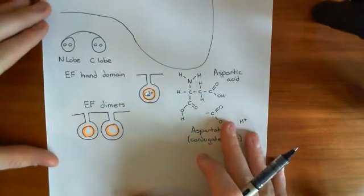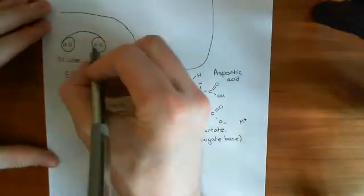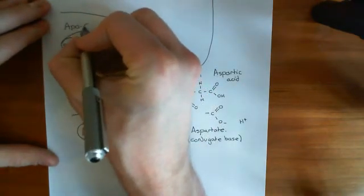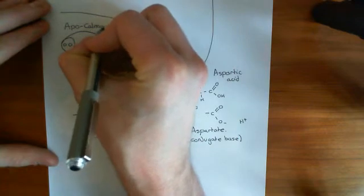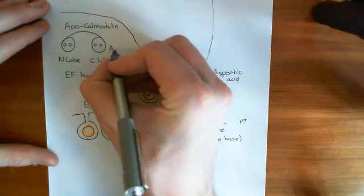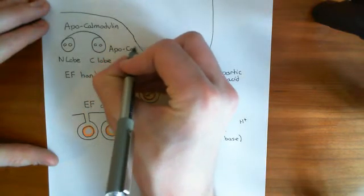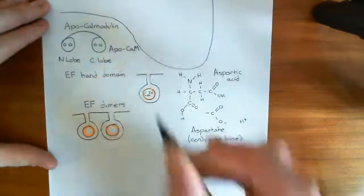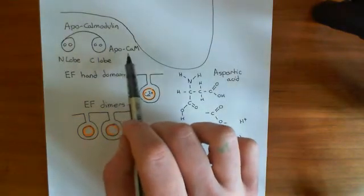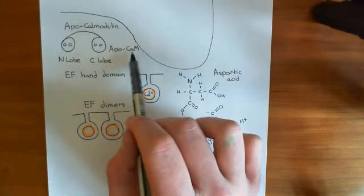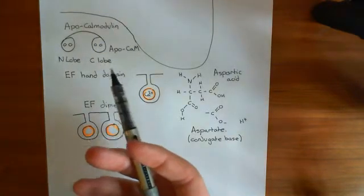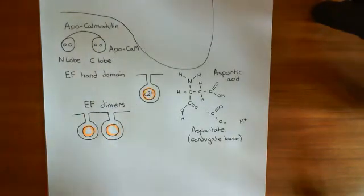Before calmodulin has calcium bound to it, in this state it is known as apocalmodulin, often denoted apoCaM — where CaM with a capital C, lowercase a, capital M is the shorthand for calmodulin. ApoCaM is therefore the calmodulin molecule with no calcium bound to it.